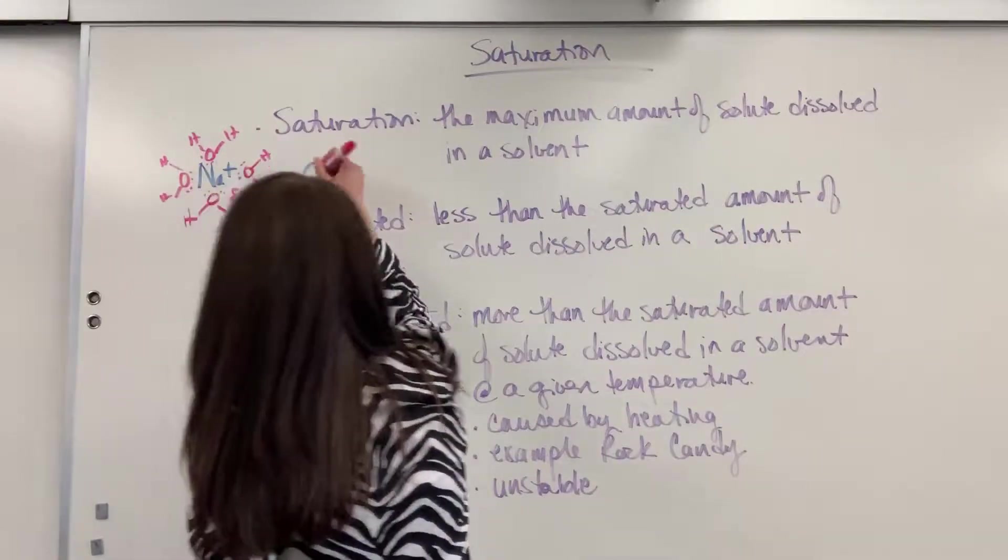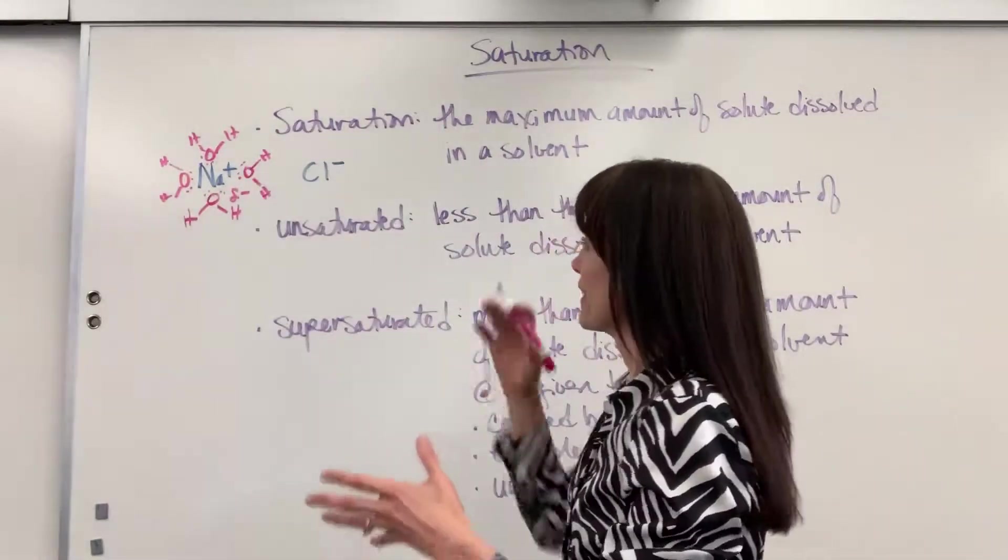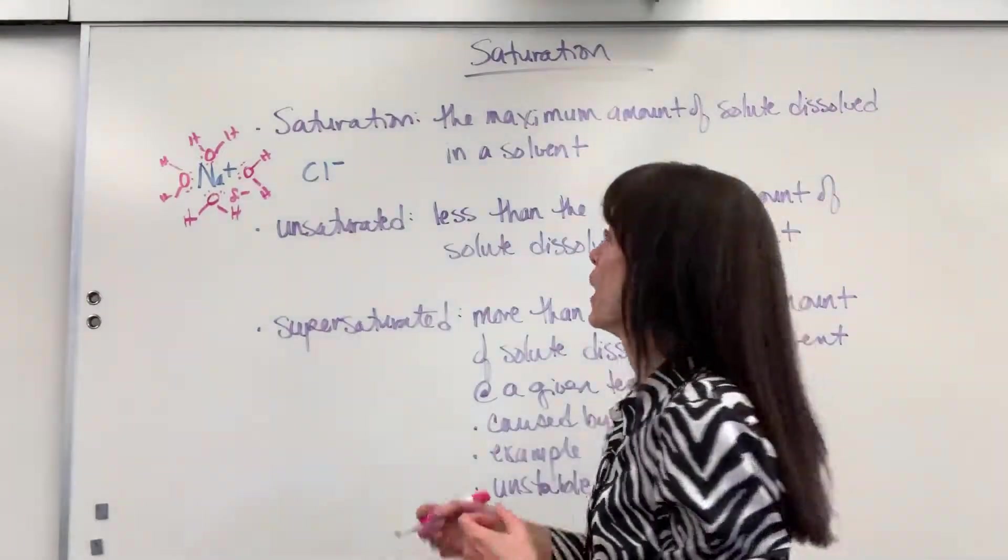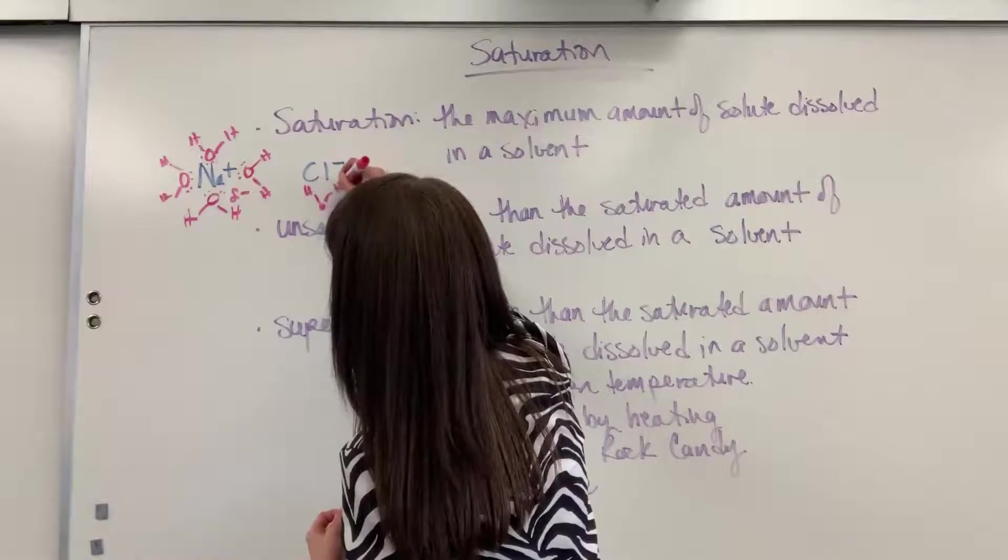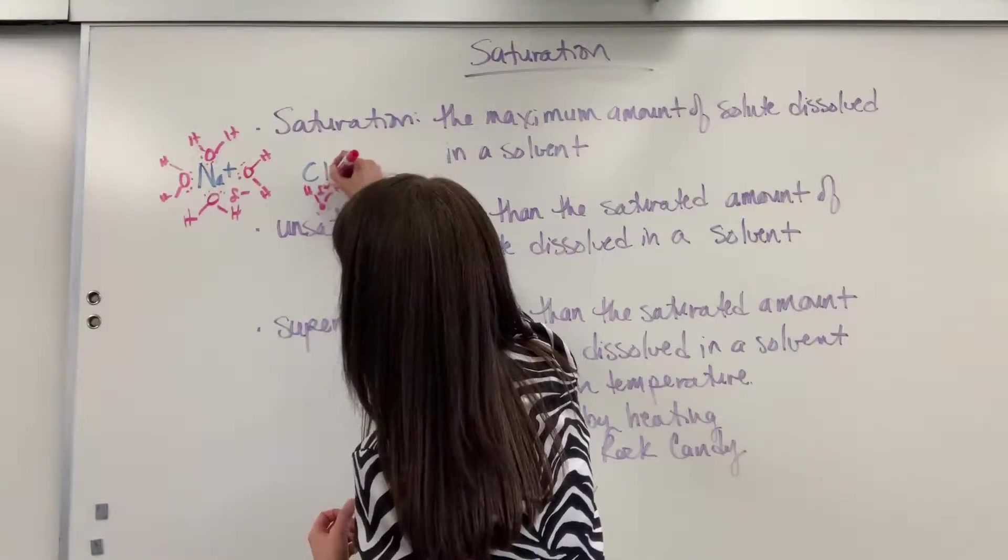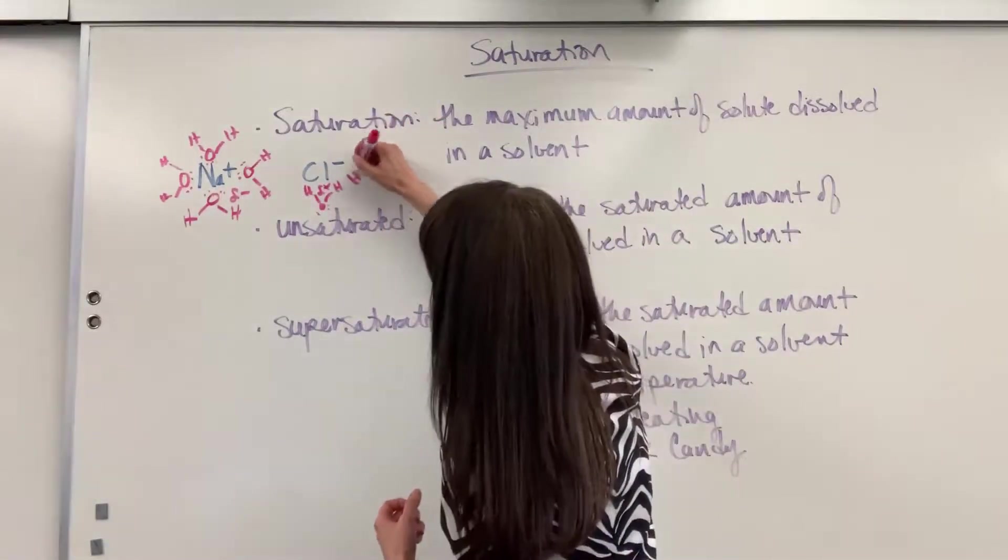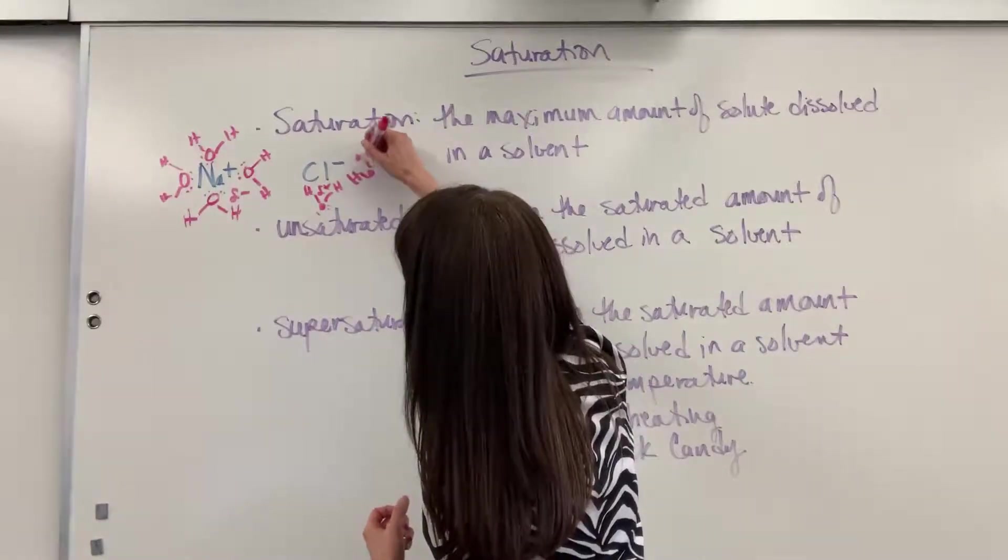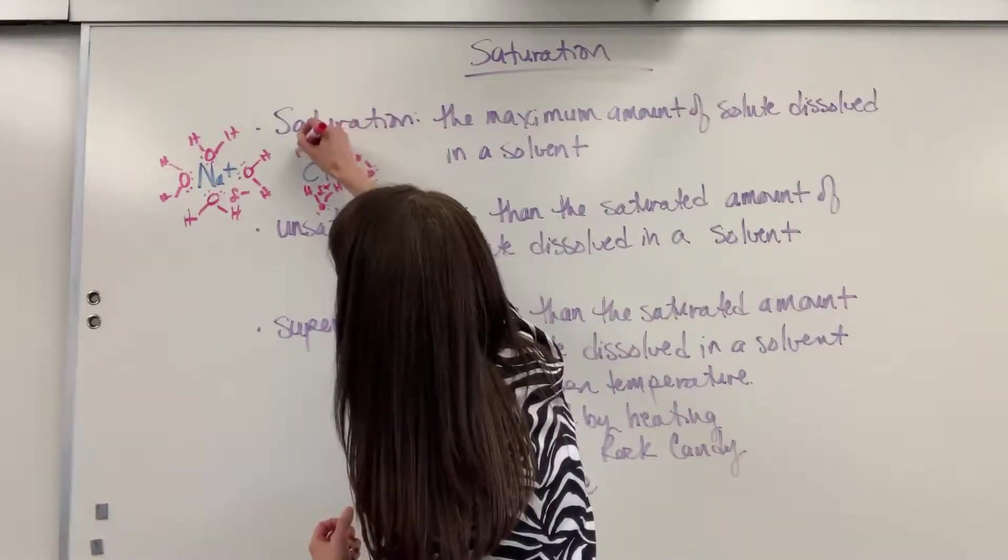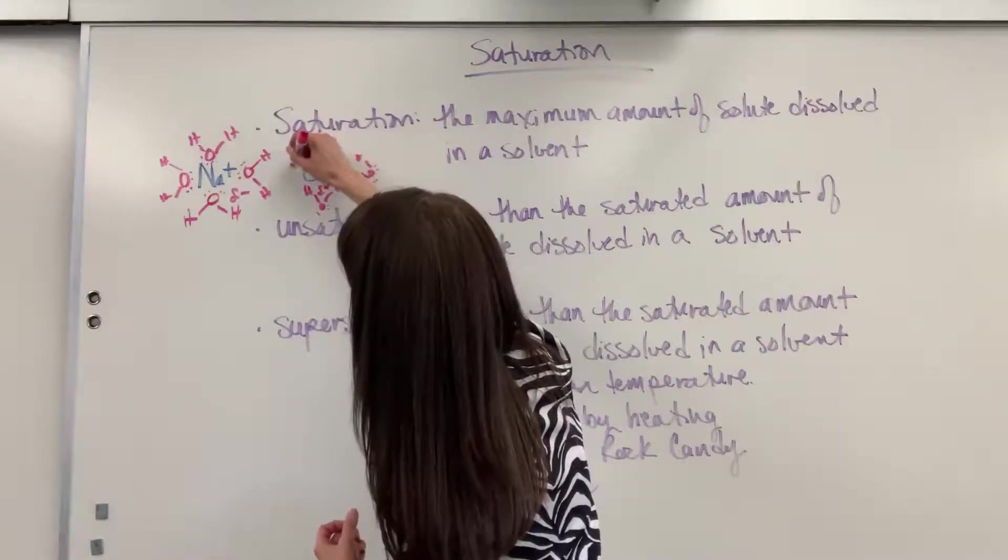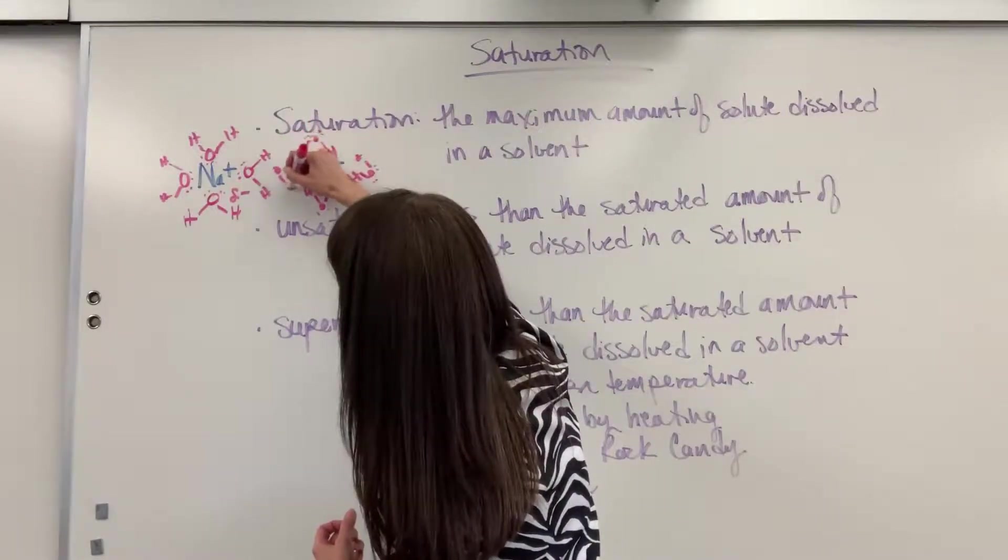Then, for our chloride ion, again, this ion-dipole interaction. The negative chlorine is going to attract the positive end of the polar molecule of water. It's that partial positive right there. So let's draw, sorry you guys, a little sloppy there, four of the six water molecules that would surround that chloride ion.